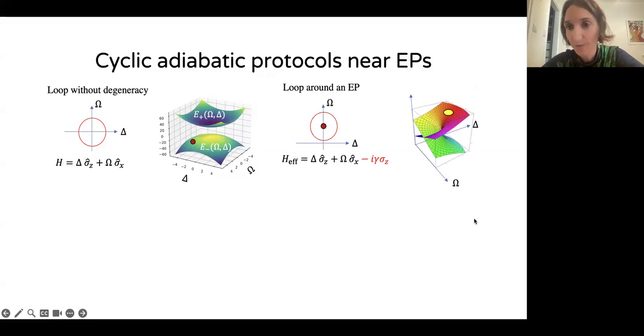However, if we consider an open system with an exceptional point, like this open system with the decay that we had on the previous page, the exceptional point looks like a twist in the energy surfaces or the Riemann surfaces. If we initialize our system on one of its states and we perform a loop, we will end up in the other manifold and we have to encircle it twice to get back to the original state. That's not even the end of the story.